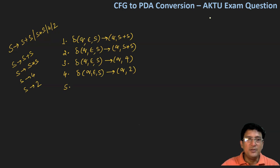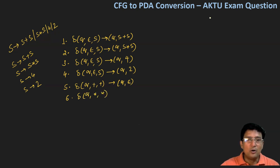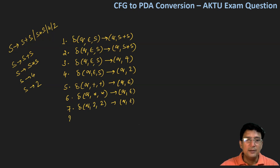इसके अलावा जो भी कोई expression आएगा उसमें 2, 4, multiplication symbol, या plus symbol होगा. तो अगर यह match करते हैं — state Q में हैं, plus stack के top पे है और plus ही input symbol है तो हम इसको pop करते हैं (rule 5). Similarly, input symbol star है और stack का top भी star है तो pop करते हैं (rule 6). Input symbol 2 है और stack का top भी 2 है तो pop करते हैं (rule 7). Input 4 है और top of stack भी 4 है तो pop करते हैं (rule 8). So these are the 8 rules.